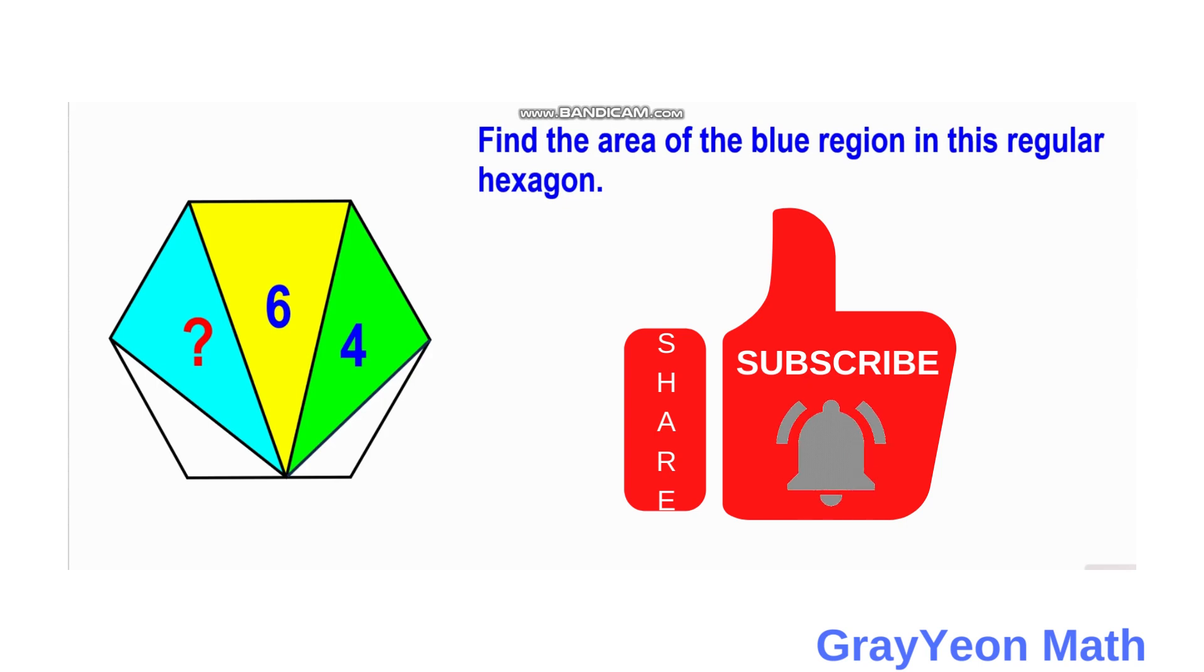We have a regular hexagon and inside this regular hexagon are three triangles shaded as yellow, green and blue. The yellow triangle has an area of 6 square units and the green has an area of 4 square units and the blue is unknown and we are required to find the area of the blue region in this regular hexagon.